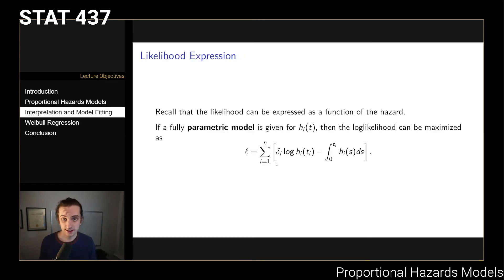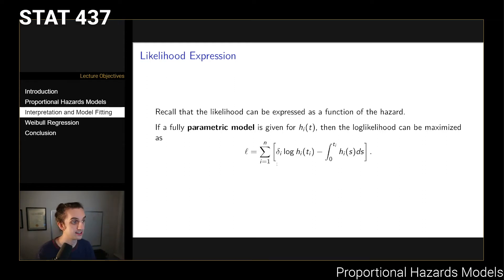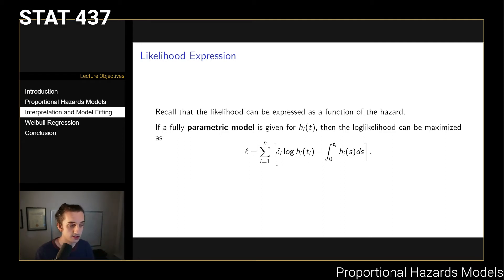So the idea is: plug in any parametric baseline hazard, plug in the covariates you care about, and then fit this model using the likelihood. However, one limiting aspect is that you do have to specify a parametric form for the baseline hazard, and it's not always obvious what that baseline should be.